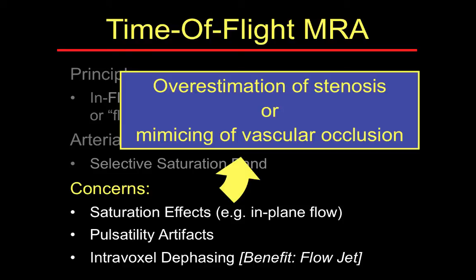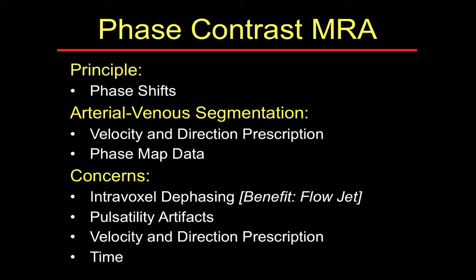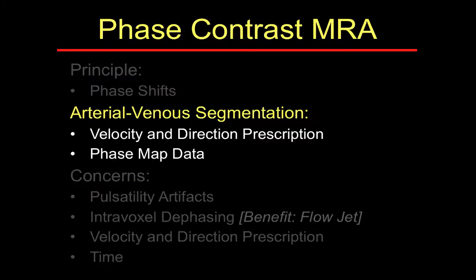All of these concerns related to time-of-flight result in overestimation of stenosis, to the degree that it may sometimes mimic vascular occlusion. Another common technique for non-contrast imaging is phase contrast MRA. In phase contrast, we rely on the phase shifts that protons experience when they move along a gradient field. Selective arterial and venous segmentation is achieved by proper setting of the velocity encoding and direction of prescription.